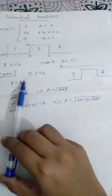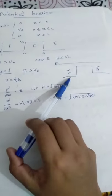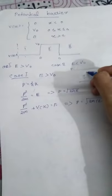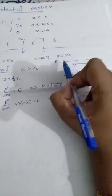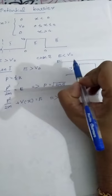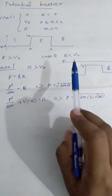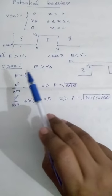We will consider case 1: E greater than V0. We check the corresponding profile where the maximum value is V0. The incident particle has energy greater than V0. So case 1 is E greater than V0.